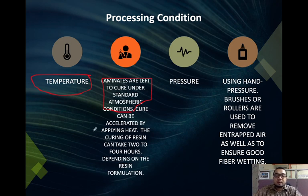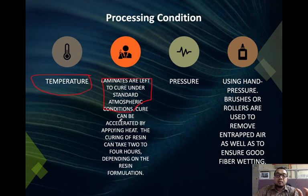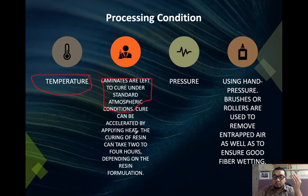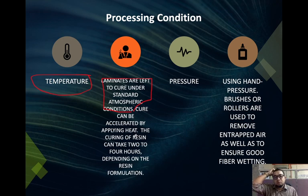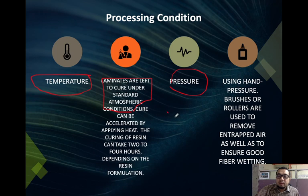The curing of resin can take 2–4 hours depending on the resin formulation. For pressure: using hand pressure, brush, or roller is used to remove trapped air as well as to ensure good fiber wetting. Reinforcement is pressed into the resin using hand pressure with a brush or roller.